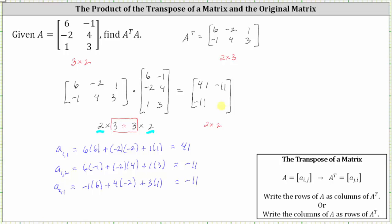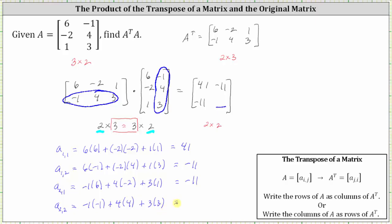Now let's find the last element, which is in row two, column two. We multiply row two in the first matrix and column two of the second matrix. The element a sub two comma two is equal to negative one times negative one plus four times four plus three times three, which gives us positive one plus 16, which is 17 plus nine, which is 26. And now we have the product of A transpose and A. I hope you found this helpful.